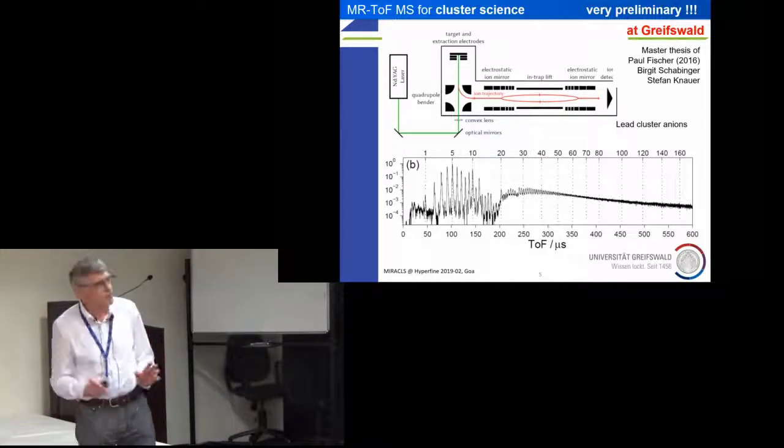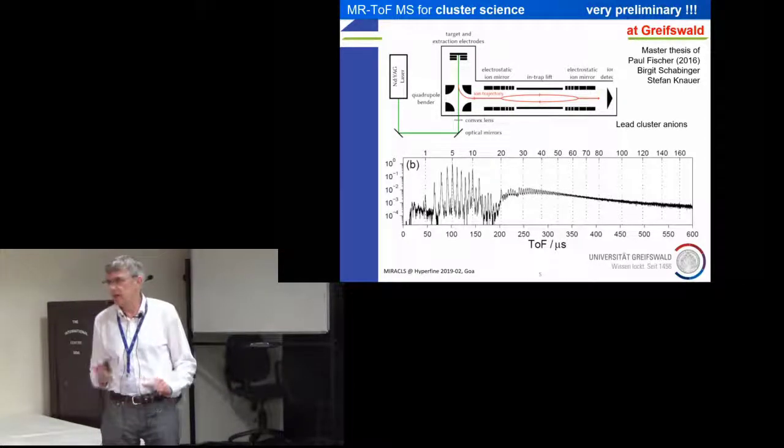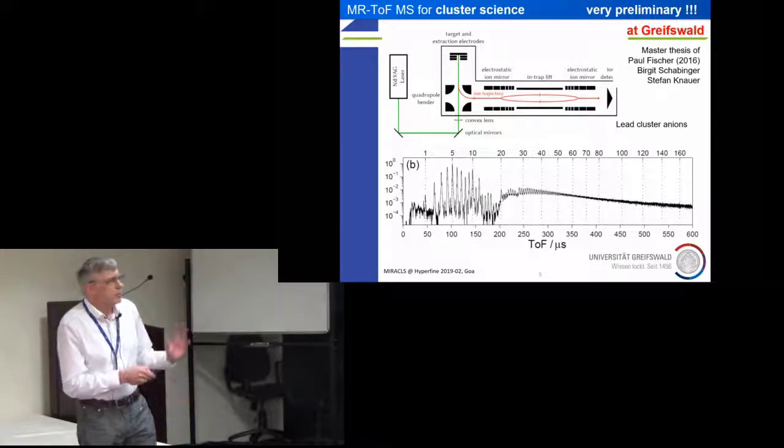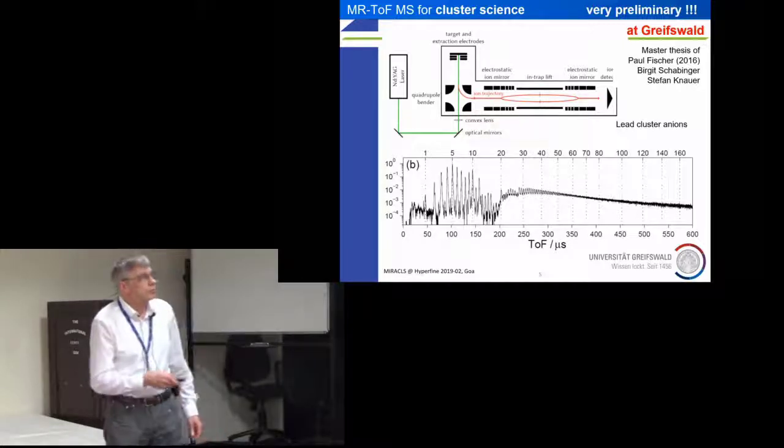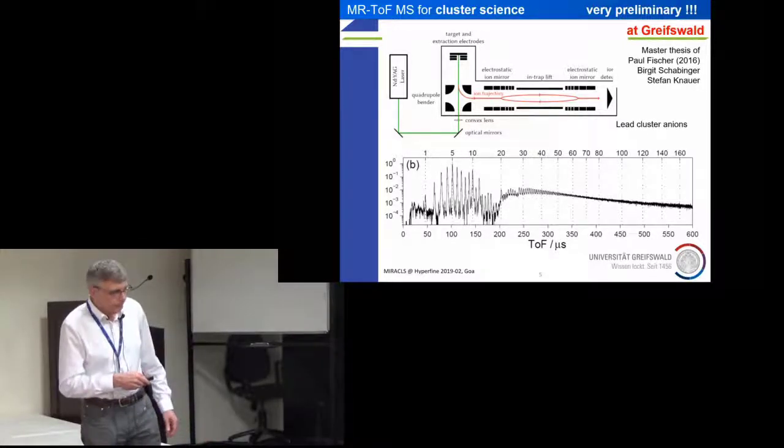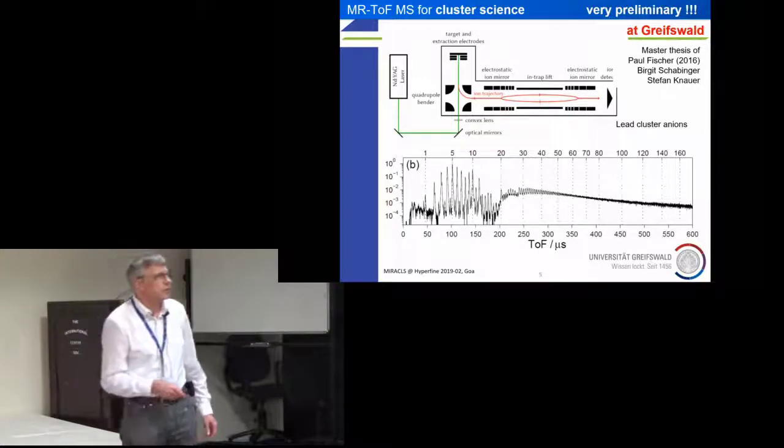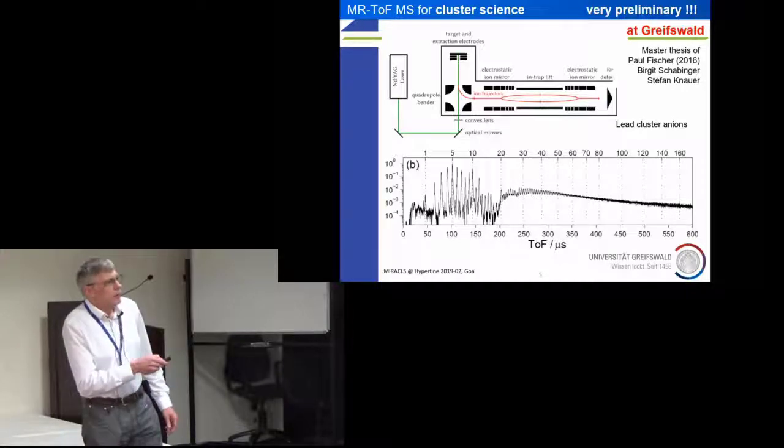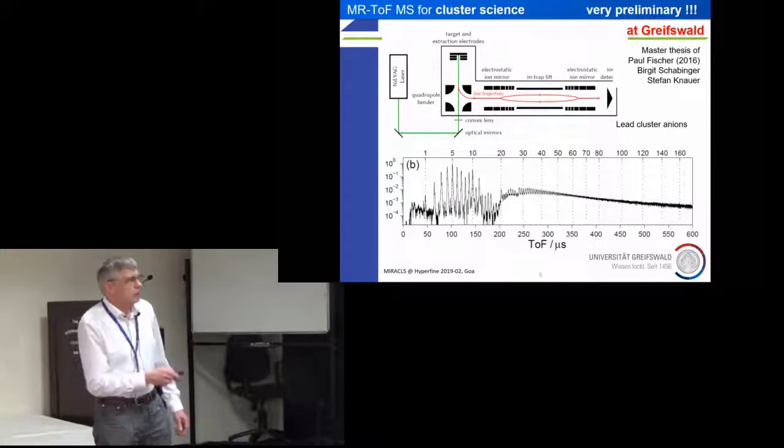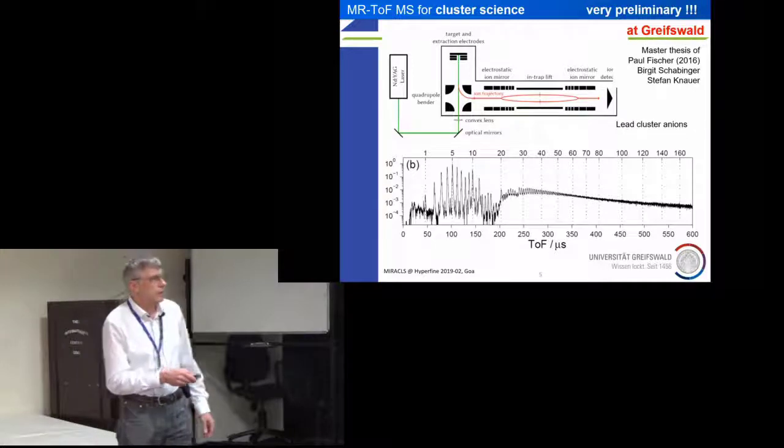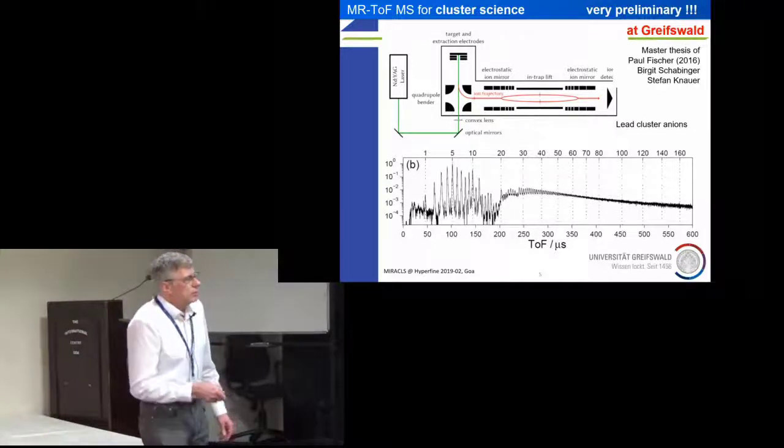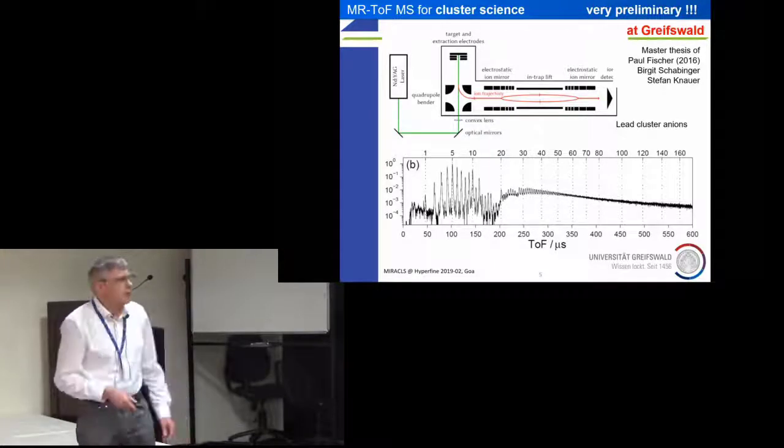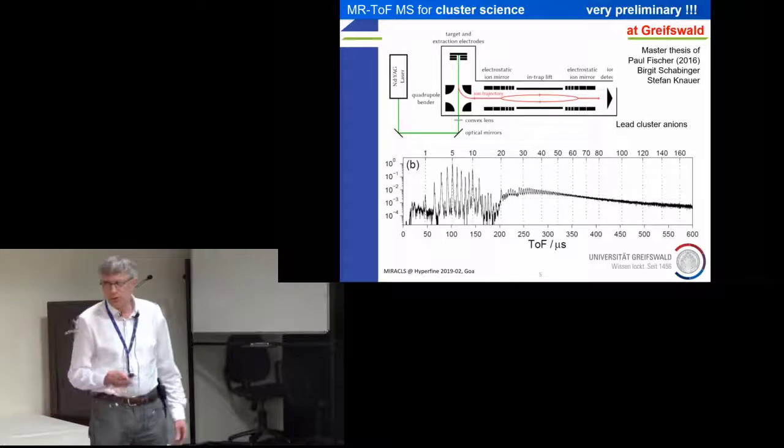A more simple experiment we have at Greifswald at home, where we use just a laser ablation to create a bunch of clusters, atomic clusters. It's the same experiment. If you let the ions run through just once, you get all the different cluster sizes - in that case it's lead clusters of 20, 50 or whatever number of atoms. And you can further study these.